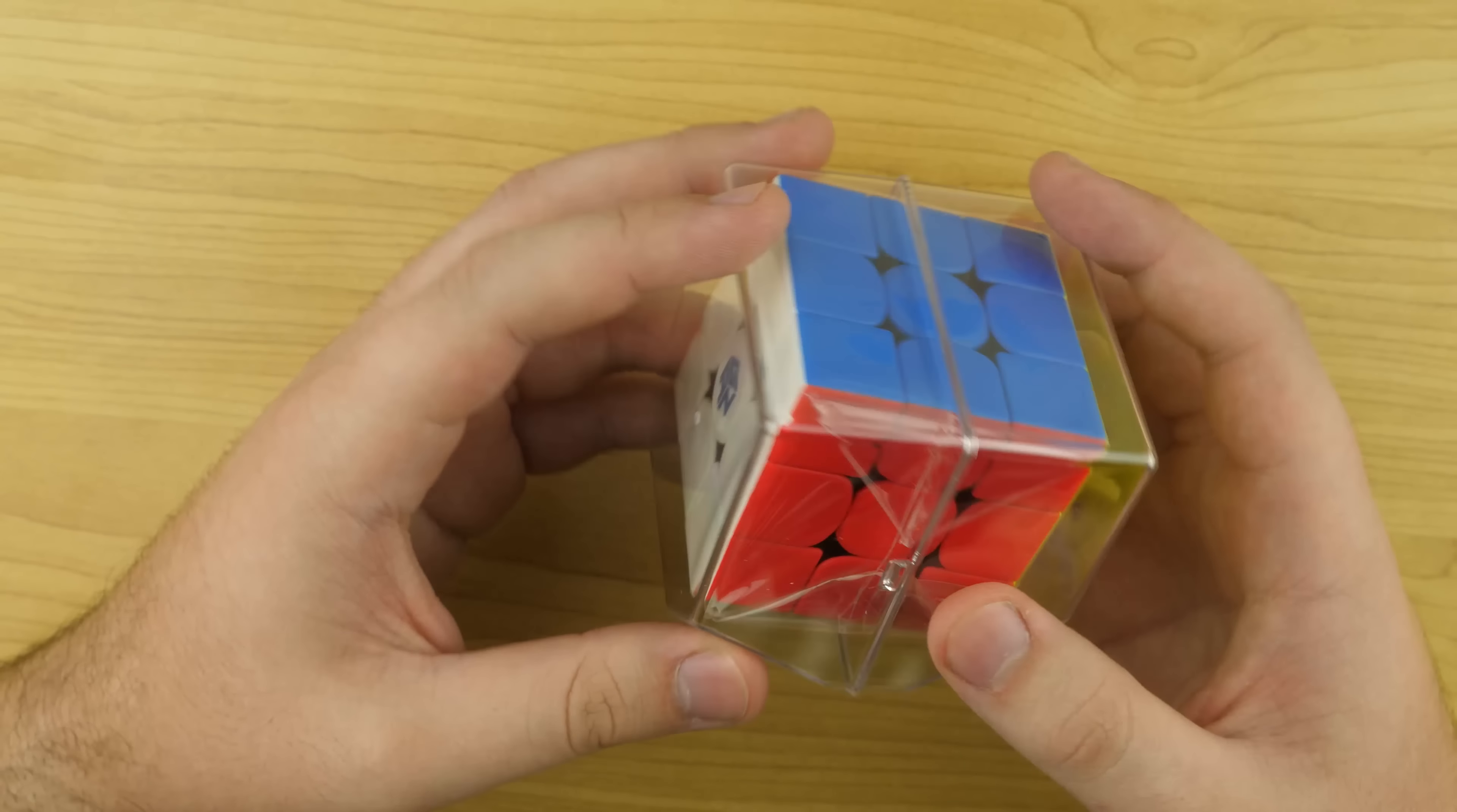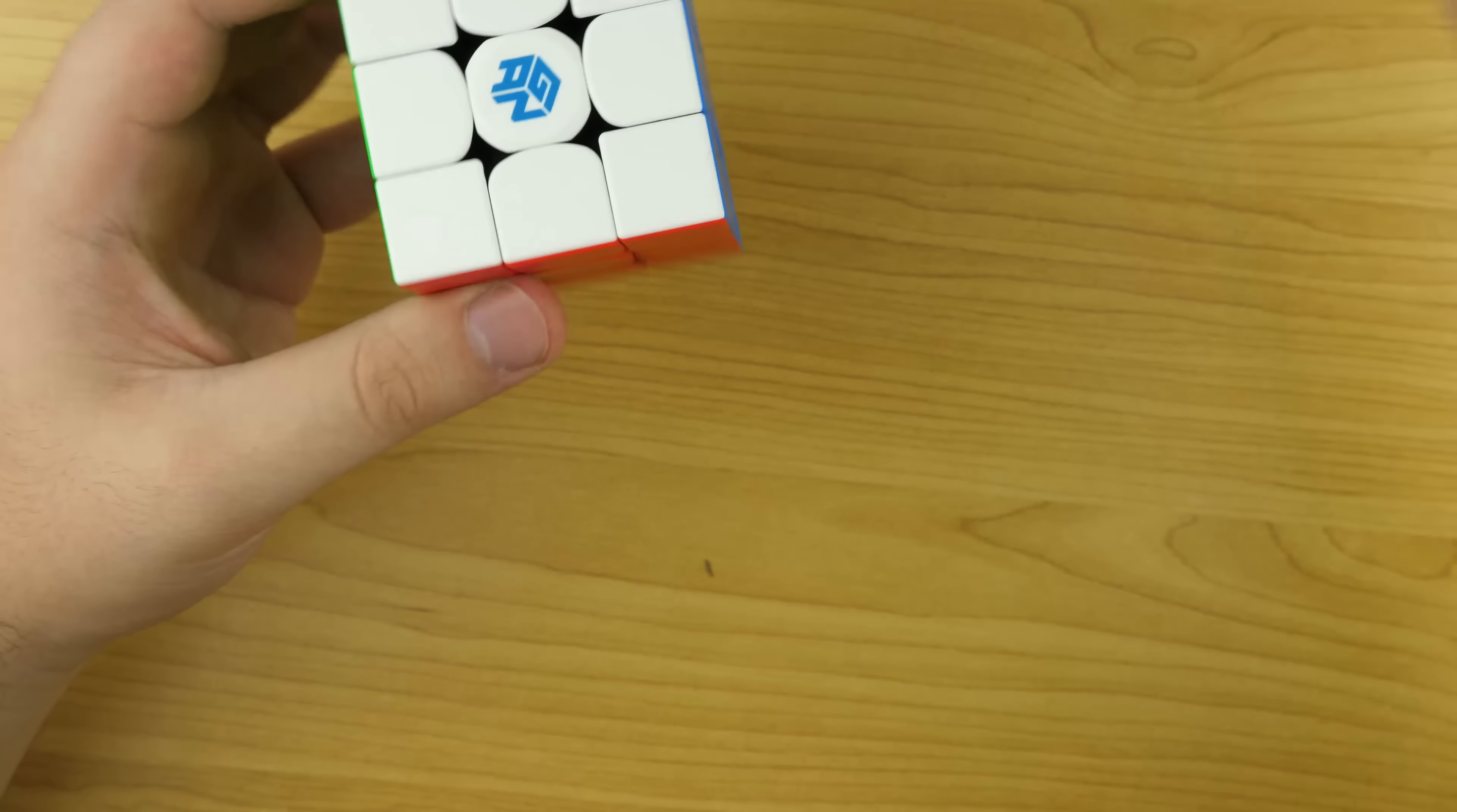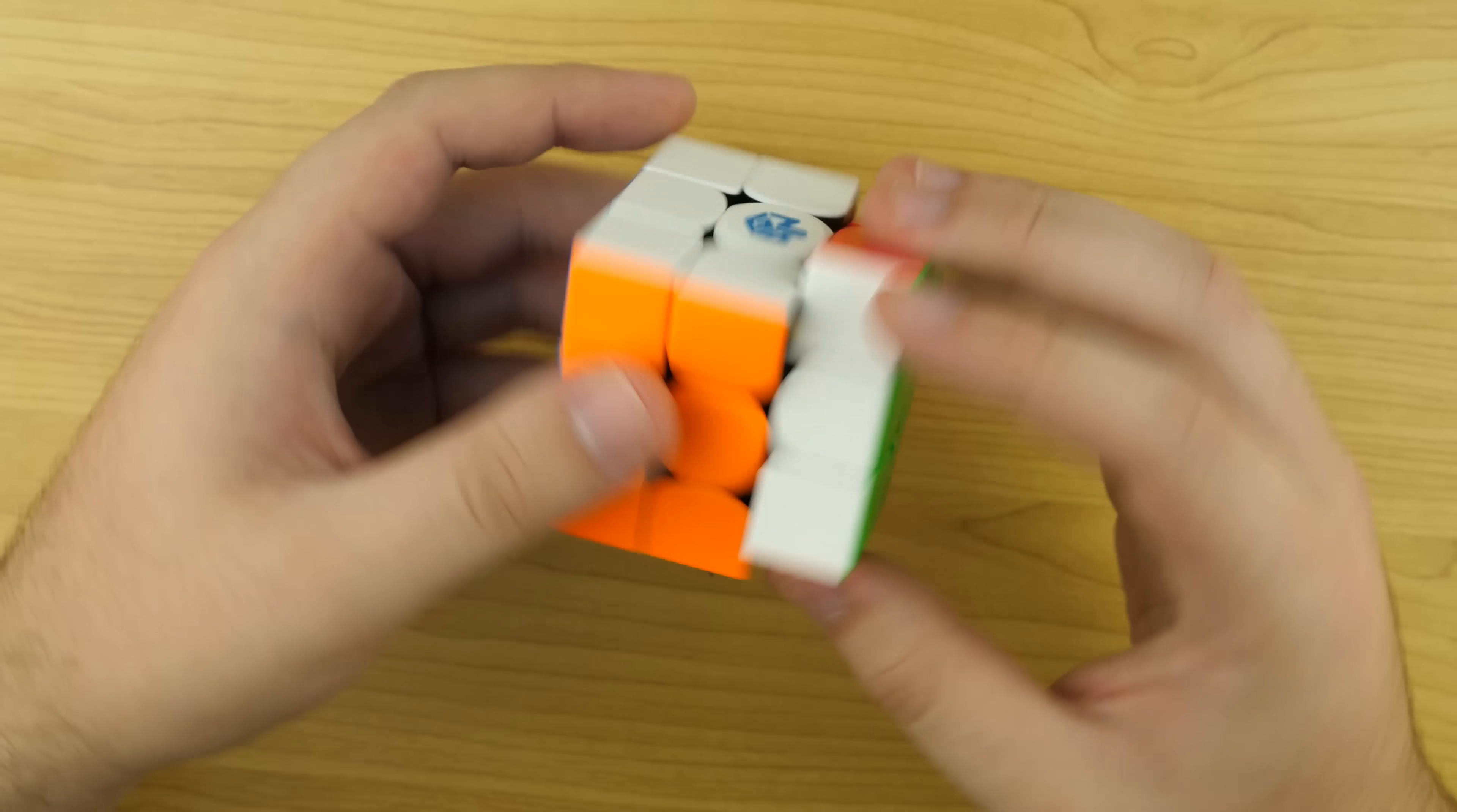So let's see. We have the cube box, then we have the cube itself. All right. Looks pretty good. Shades look great. Let's do some first turns. Right away, medium magnets.